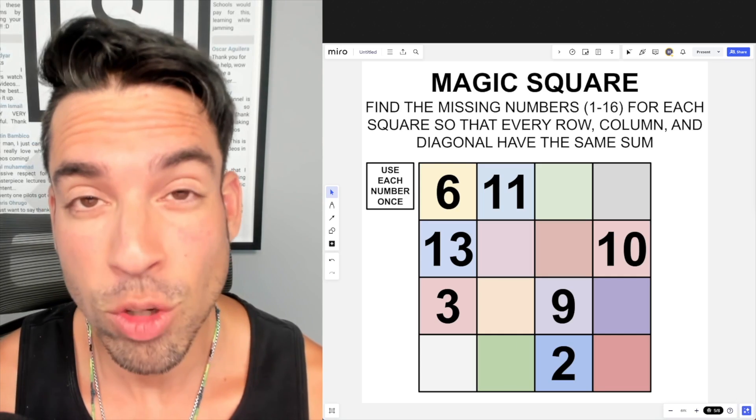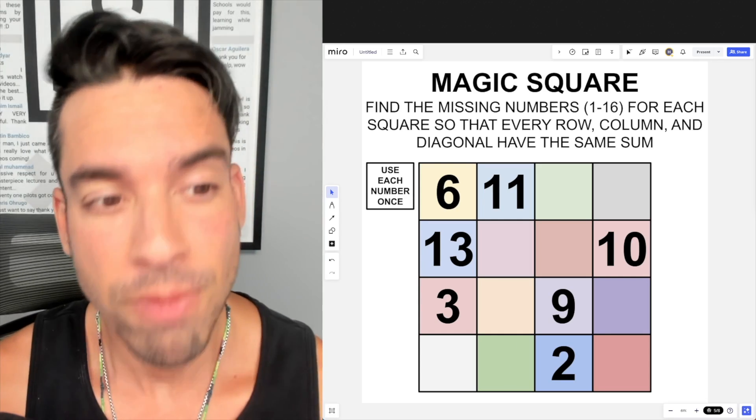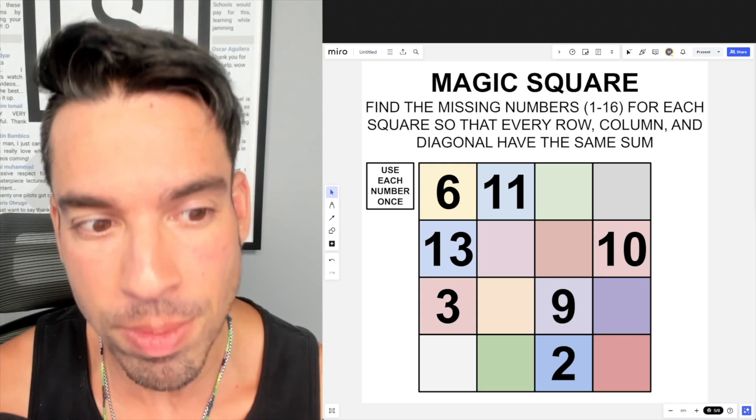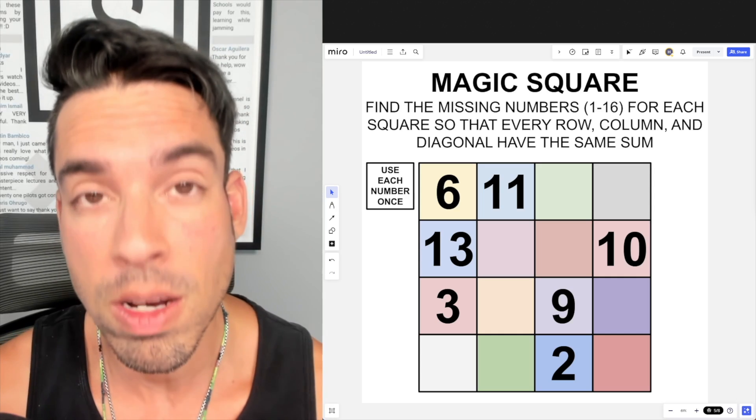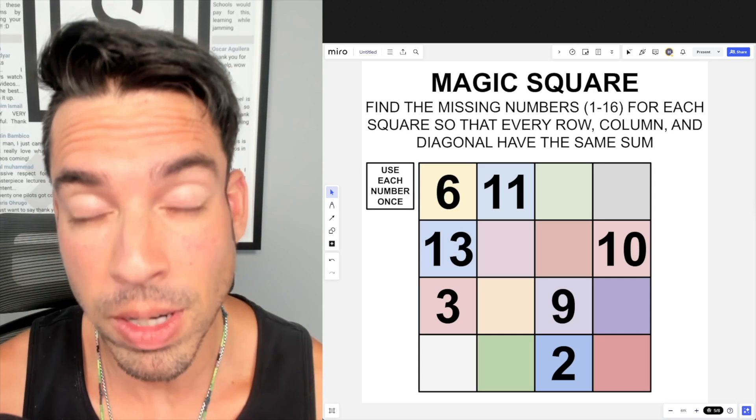What's up everybody and welcome back to another math puzzle. In this one, the question is as follows: find the missing numbers 1 through 16 for each square so that every row, column, and diagonal have the same sum. This is a super fun magic square question. Hit that pause button and see if you can figure it out.